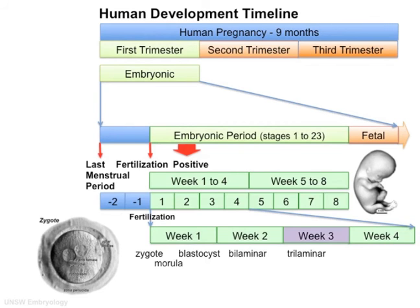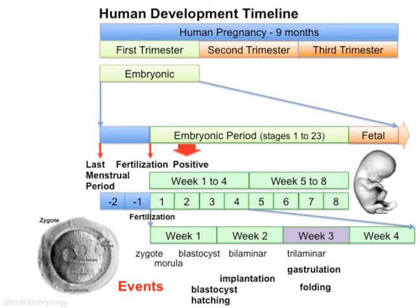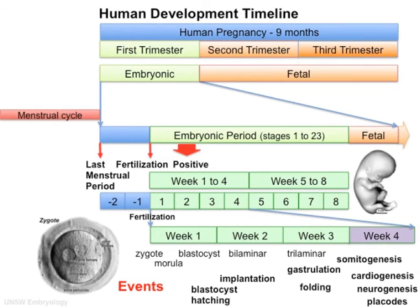If we now look at the events: at the end of week one the blastocyst hatches, week two implantation in the uterus, week three key developmental processes, and week four the heart and other structures.